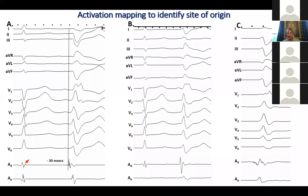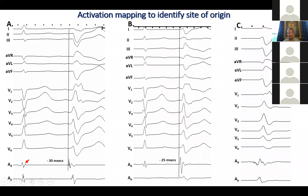The second example: during sinus rhythm we have an electrogram, but there's nothing really interesting about it. During the PVC, the same site has something which precedes the QRS about 25 milliseconds. This was a successful ablation site, but there's nothing very unique about the sinus rhythm electrogram.